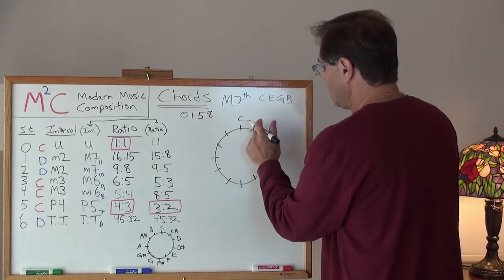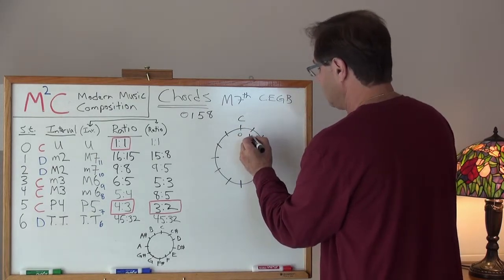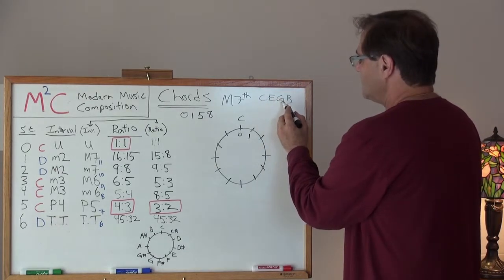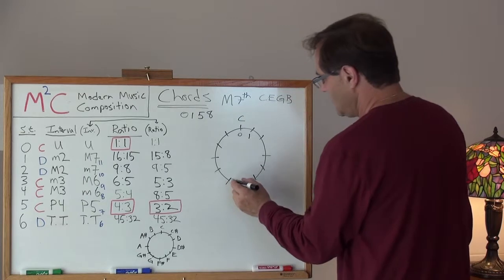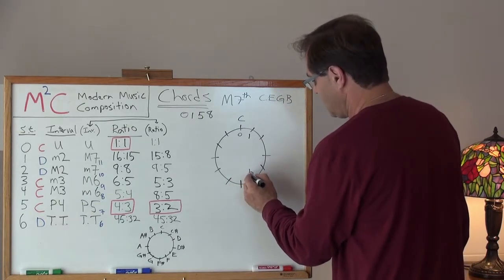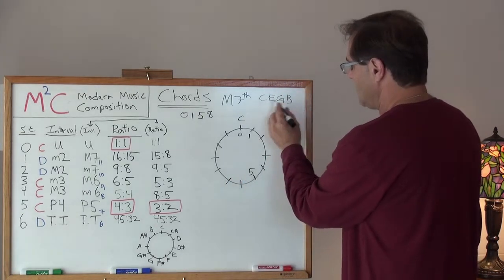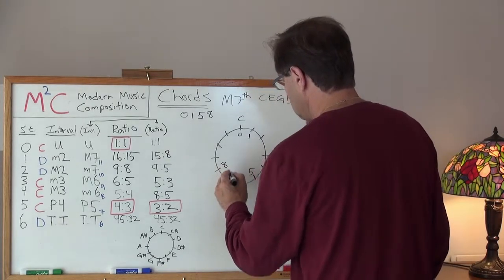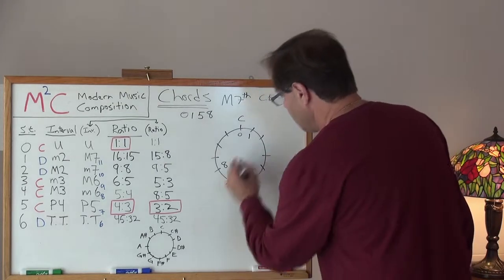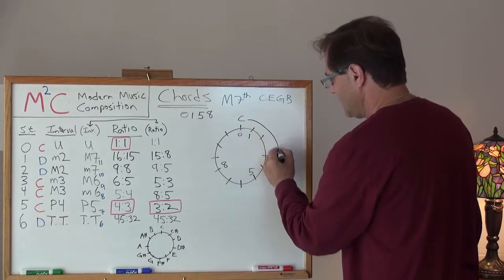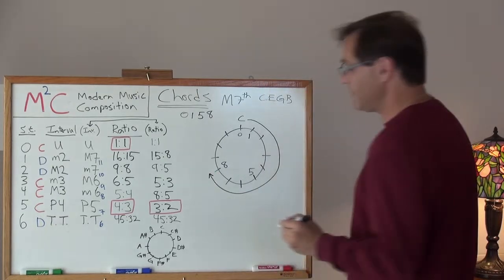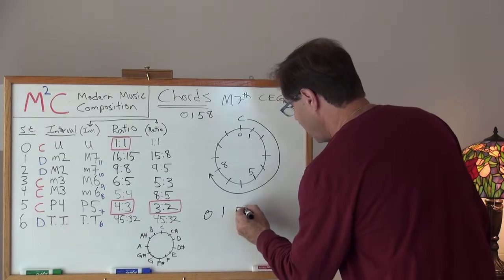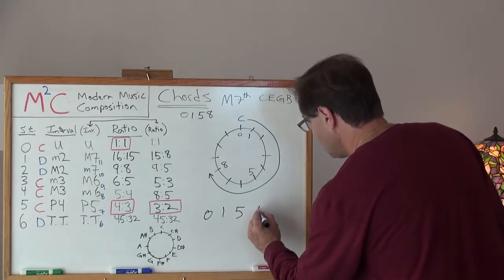B gets inverted over here, so that becomes a 1. Again, G becomes a 5 and a B, C, E becomes an 8. Well, there you have it. 0, 1, 5, 8.